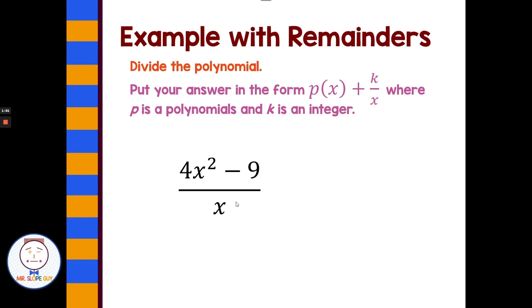So x divides evenly into 4x squared, giving 4x. But x does not divide evenly into negative 9. Well, to put it in that format, I can just leave my answer as a fraction, which is really leaving it as future division. So 4x squared divided by x is 4x, then subtract 9 over x. It kind of puts this division off to later.